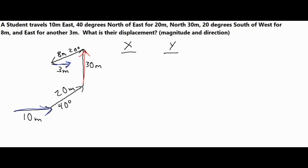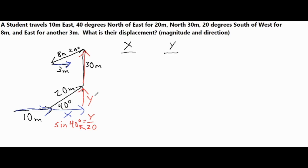We close off this vector with an x and y component — here's the x component and here's the y component — closing off that 40-degree angle. For the y component, we use sine of the angle, since sine gives the opposite side over the hypotenuse. So we have the opposite y side over the hypotenuse of 20. Multiplying both sides by 20 gives us 20 times sine of 40 degrees, which equals 12.86 meters.